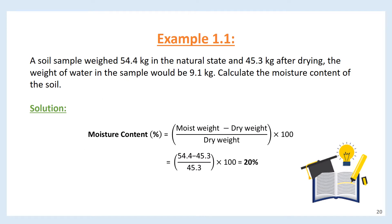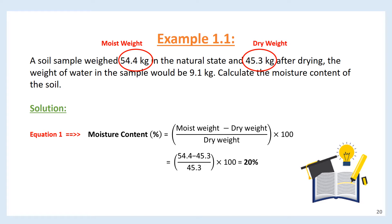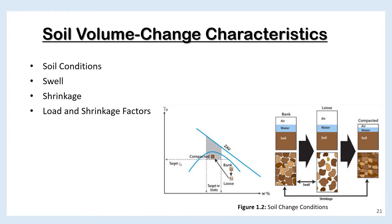Let's do an example question to determine moisture content. Example 1.1: A soil sample weighed 54.4 kg in the natural state and 45.3 kg after drying. The weight of water in the sample would be 9.1 kg. Calculate the moisture content. Using equation 1: 54.4 minus 45.3, divided by 45.3, multiplied by 100. The answer is 20%.